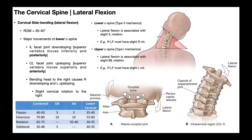When we laterally flex to the right, notice what's happening on either side of the cervical spine. The left side becomes longer and more open, while the right side — the side you're bending toward — becomes shorter and more closed. You can see the difference in the distances on each side.